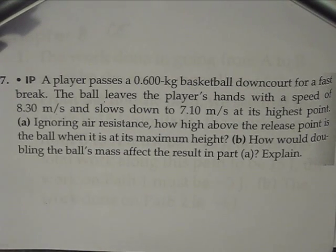Okay, so here's a conservation of energy problem, and we'll be dealing with potential energy and kinetic energy to solve it. It says a player passes a 0.6 kg basketball down court for a fast break. The ball leaves the player's hands with a speed of 8.3 meters per second and slows down to 7.1 meters per second at its highest point. Ignoring air resistance, how high above the release point is the ball when it is at its maximum height?